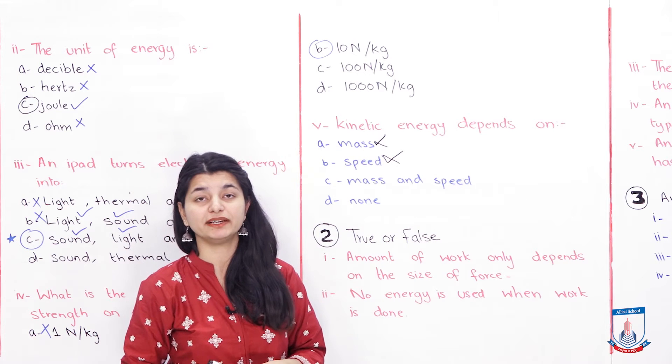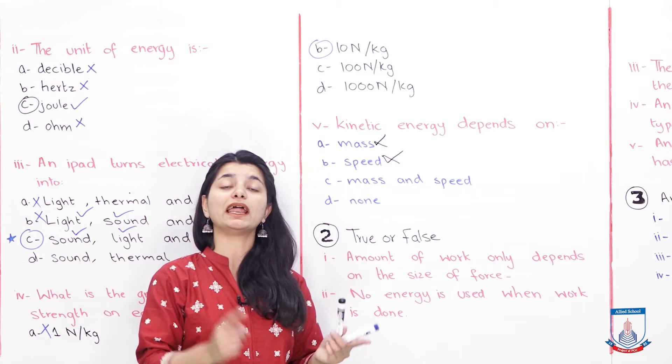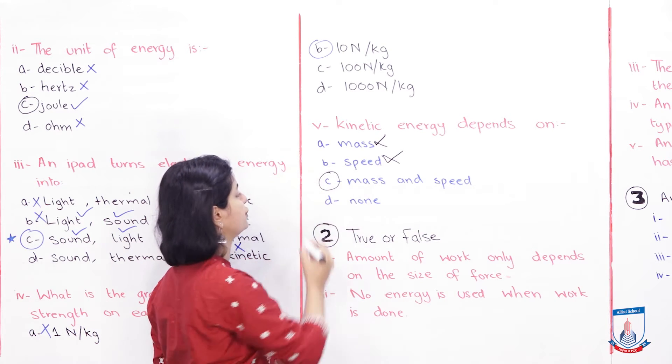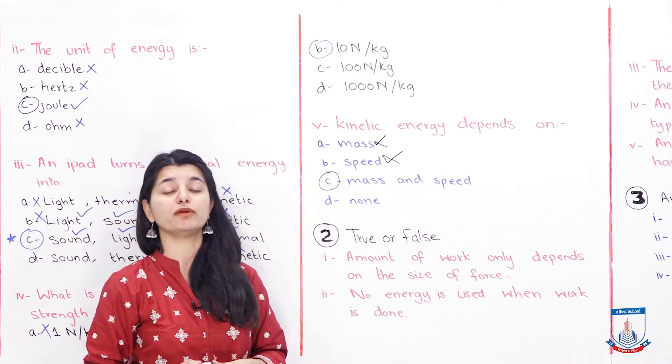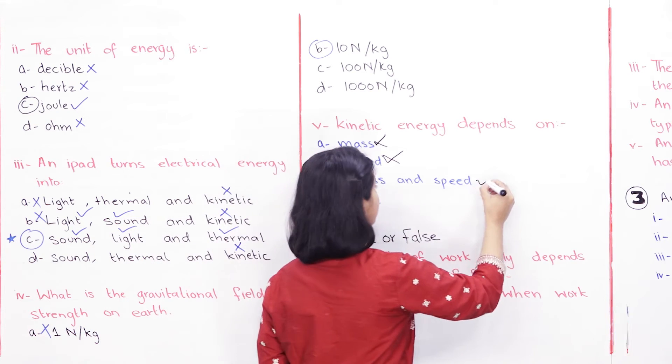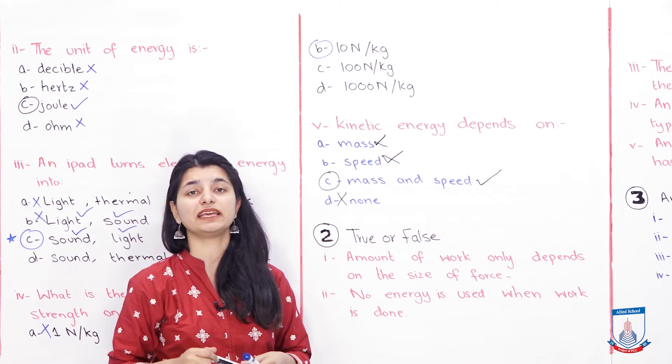So mass and speed, it depends on both things. The more amount of mass, the more amount of kinetic energy will be. And at the same time, the more amount of speed, the more amount of kinetic energy will be. Lastly, D is none of the above. So there is no option above. If there is no option above, you select option D. But since C is the correct answer, this will not go into your answer. And your answer will be part C.